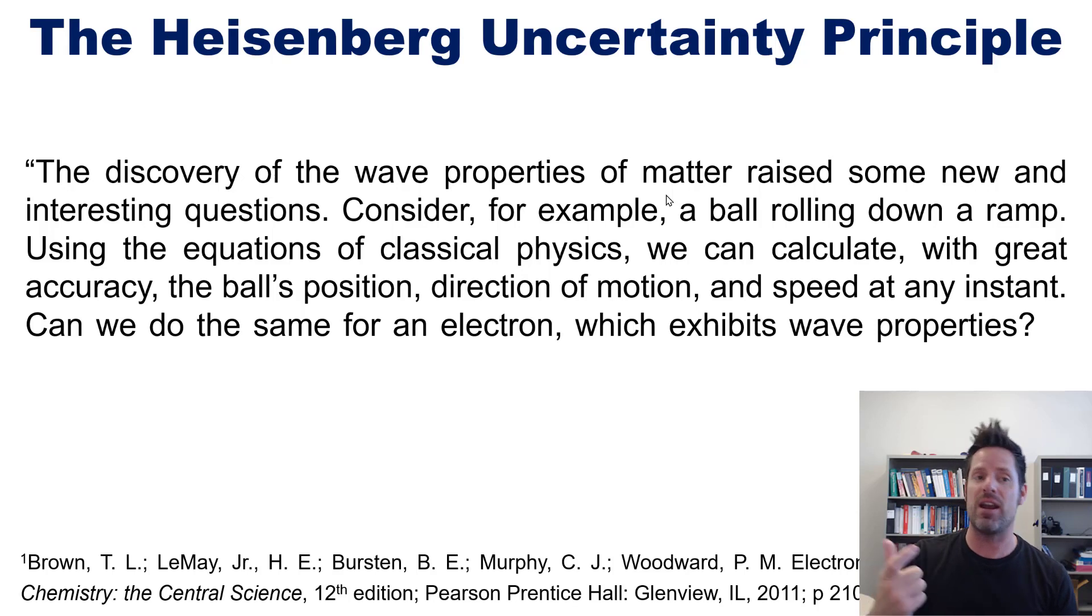We begin with a quote from our glorious textbook referenced at the bottom of this slide and in the description below. Quote, the discovery of wave properties of matter, that is the discovery made by de Broglie, which I covered in a previous video linked in the description below, raised some new and interesting questions. Consider, for example, a ball rolling down a ramp. Using the equations of classical physics, we can calculate with great accuracy the ball's position, direction of motion, and speed at any instant. Can we do the same for an electron, which exhibits wave properties?